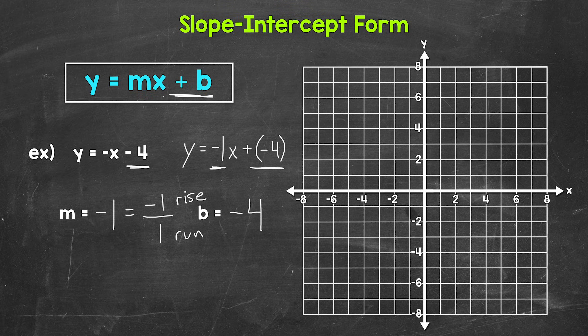Now let's graph, starting with the y-intercept. We need to plot a point at negative four on the y-axis, so at zero, negative four — which is right here. Now we need to go from that y-intercept using our slope. Rise of negative one means we go down one unit, and run of positive one means we go to the right one unit. So down one and then to the right one — our second point is right here.